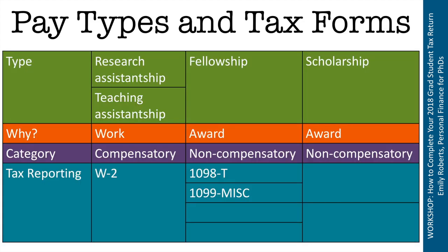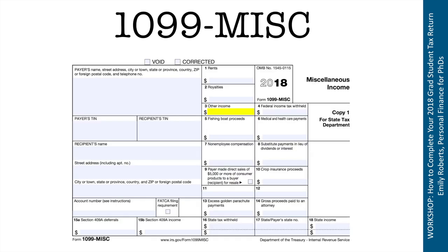Fellowship income might also show up on a 1099 miscellaneous in box three. I know for sure that Duke University reports fellowships this way, and there may be others. This is important: box seven of a 1099 miscellaneous is where non-employee compensation is typically reported for self-employed or contractor income. It's easy for students to get confused and think they're self-employed just because they received a 1099 miscellaneous, but that's not the case. Your fellowship or training grant income goes in box three, not box seven.